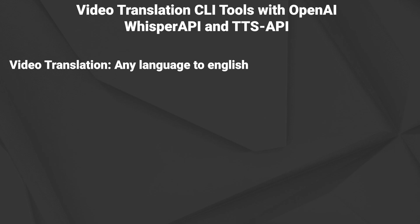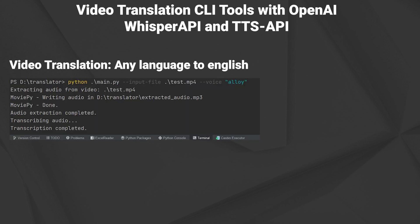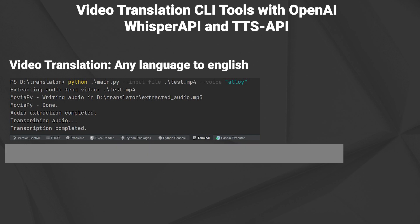Today I'm going to show you how to translate videos with the OpenAI Whisper API and Text-to-Speech API. The final tool is a CLI tool that allows you to convert videos on your file system to English. We're going to use Typer, a library to create CLI tools, to make this process more convenient and allow us to choose from different AI voices with automatic cleanup of temporary files and so on. A pretty cool but small project.